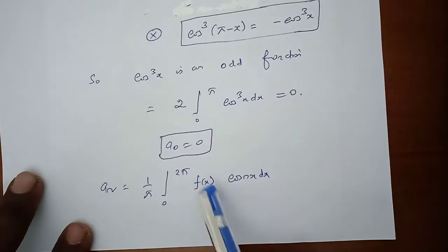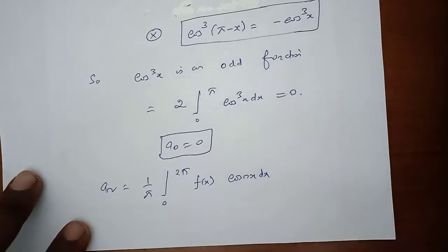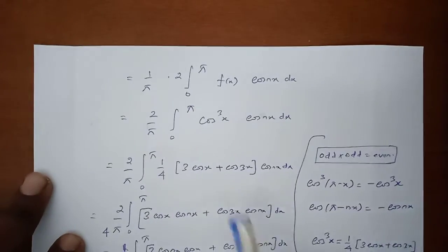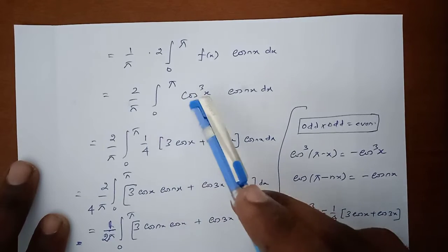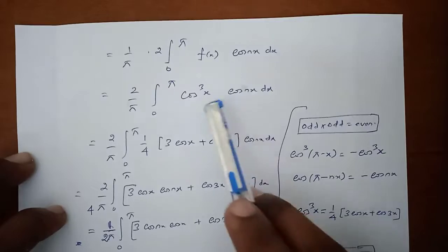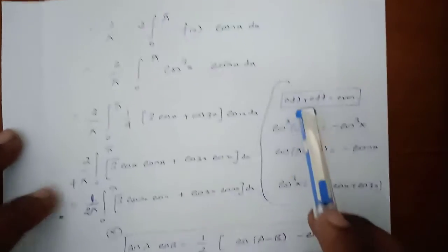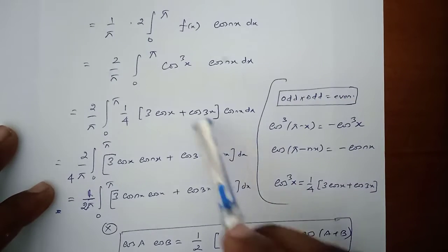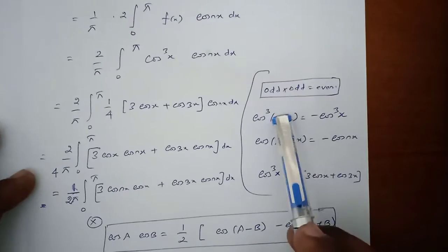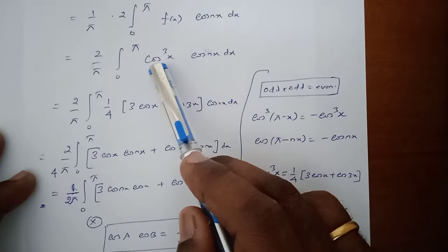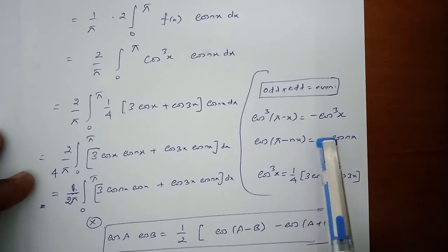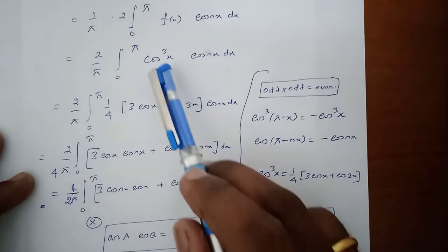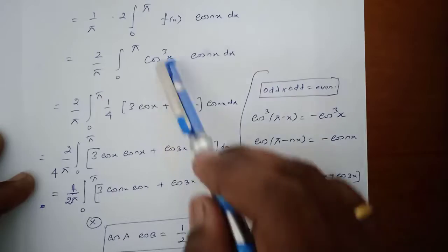Similarly, we apply the aₙ formula: aₙ = (1/π) integral from 0 to 2π of f(x)cos(nx) dx, which equals (2/π) integral from 0 to π of cos³x·cos(nx) dx. Check whether this function is even or odd. cos³x is odd, and cos(π − nx) = −cos(nx) is also odd. Odd times odd equals even, so we can proceed with the integration.